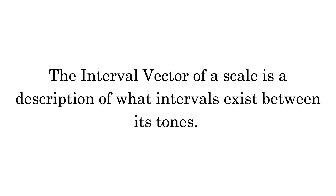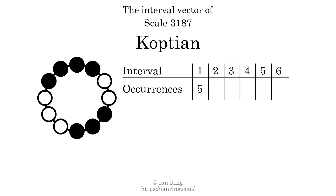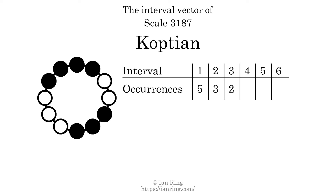The interval vector of a scale is a description of what intervals exist between its tones. There are 5 intervals with the size of 1 semitone; they are here, here, here, here, and here. There are 3 intervals with the size of 2 semitones; they are here, here, and here. There are 2 intervals with the size of 3 semitones; they are here and here. There are 3 intervals with the size of 4 semitones; they are here, here, and here.